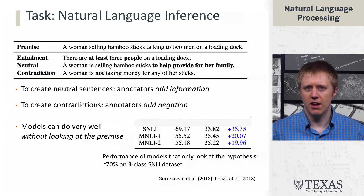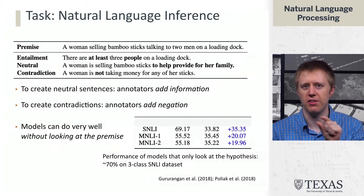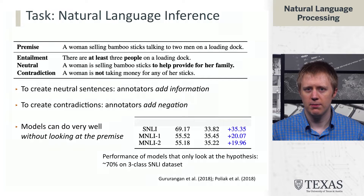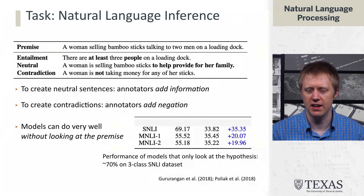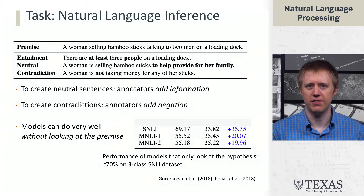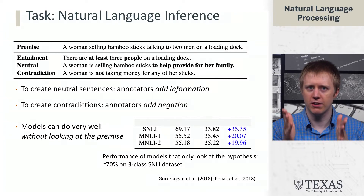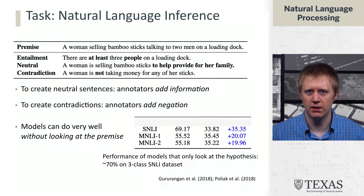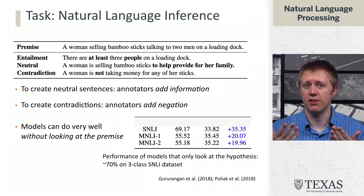One way to understand a model's behavior is to train a model that just looks at the hypothesis — what we're trying to classify — without seeing the premise. A couple of different teams of researchers identified that if you just look at the hypothesis, you can get around 60–70% accuracy depending on the dataset, which is much higher than the random chance of around one-third. This is alarming because if you don't even need to see the premise, there are clearly patterns in the hypothesis revealing what class it belongs to — these are what we call annotation artifacts.